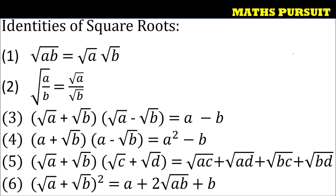The given question is related to identities of square roots. These expressions are: √(AB) = √A·√B; √(A/B) = √A/√B; (√A+√B)(√A-√B) = A-B; (A+√B)(A-√B) = A²-B; (√A+√B)(√C+√D) = √AC+√AD+√BC+√BD; and (√A+√B)² = A+2√AB+B.